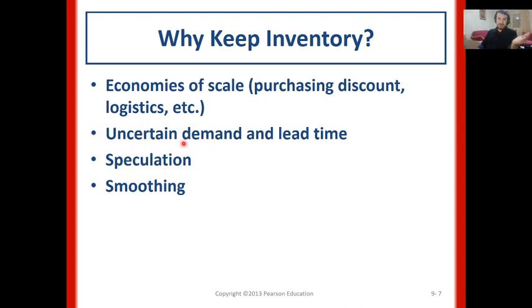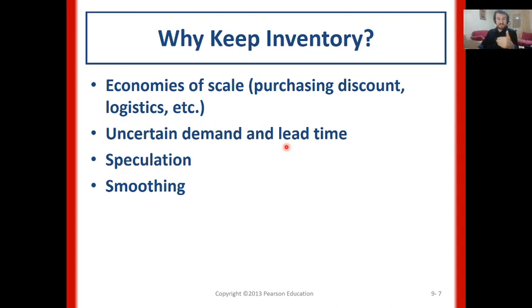Uncertainty on the side of demand and uncertainty on the side of lead time. We don't know how much we are going to sell next month, especially in traditional make-to-stock production strategies. We produce goods to stock and aim to respond to customer orders quickly. But since we don't know how much we will sell next month, considering the uncertainty in demand, we would like to keep inventory.